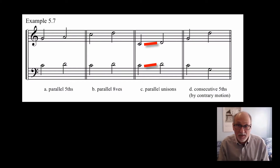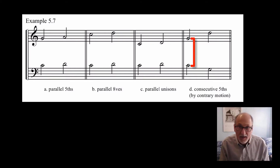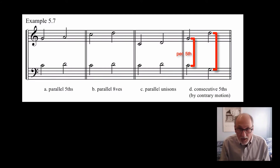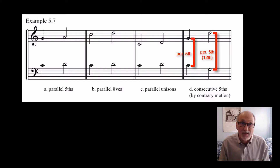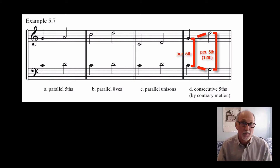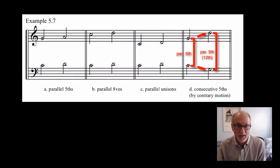That's called parallel unisons. C: these are parallel unisons. In this case, both the soprano and the tenor have the exact same note — that's definitely not something you would want to do. The last example is a little trickier. We have a C in the tenor and a G in the soprano, moving to a G in the tenor and a D in the soprano. Notice that in both cases they are the interval of the fifth — a fifth moving to a twelfth, which is essentially the interval of a fifth as well. This is what we call consecutive perfect fifths by contrary motion, and it's really the same problem as parallel fifths.